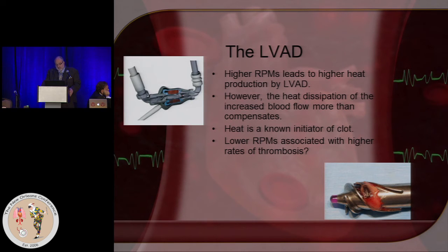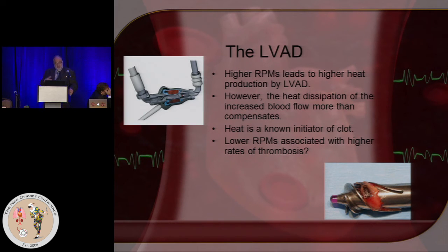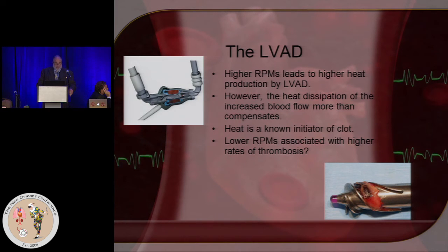Now to the VAD itself. Higher RPMs lead to higher heat production — true for any technology. However, even more important is that heat dissipation from the pump itself increases as blood flow passes by. So although you're producing more heat, the net effect because of increased blood flow is actually greater washout of heat. Heat is a big culprit in the formation of thrombus. So there is reason to think higher RPMs produce greater washout and therefore lower thrombus rates, but we don't know that for sure — not enough data yet.